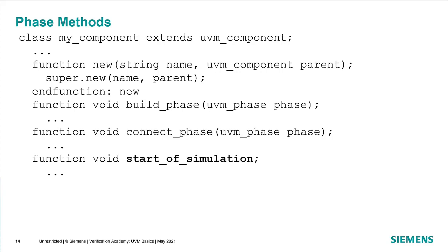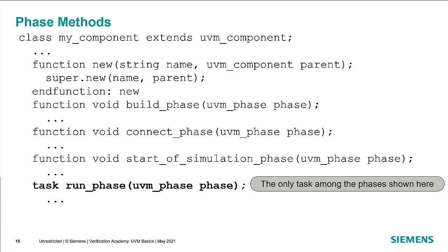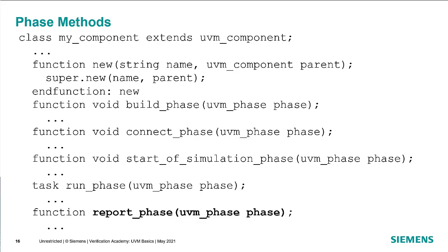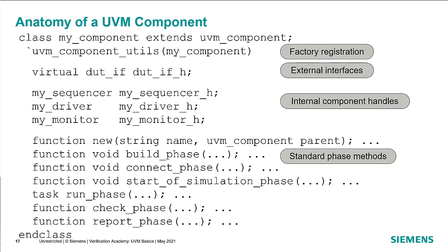Then we have a function called start of simulation, which allows us to do some extra work before simulation starts — things like opening files or printing out the topology of your environment. Then lastly we have run phase. Run phase is the only task in UVM; there are sub-phases of run phase but we won't get into those in the basics class. Run phase allows time-consuming things to happen in each component. At the end of run phase we have the report phase, where we can gather information about the system and report out what happened.